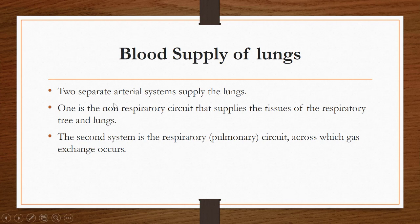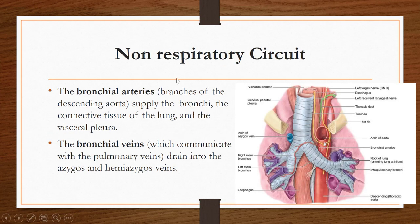There are two types of arterial system supplying the lungs: one is the non-respiratory circuit and one is the respiratory circuit. The non-respiratory circuit involves blood vessels which are supplying the tissues of the respiratory tree and lungs. The second system is the respiratory or pulmonary circuit across which gas exchange occurs. We will first discuss the non-respiratory circuit.